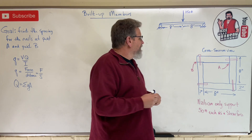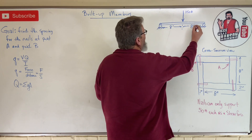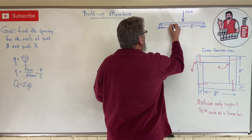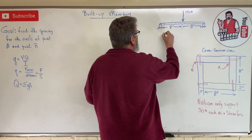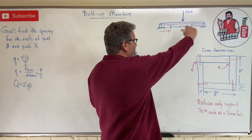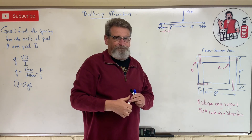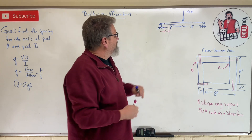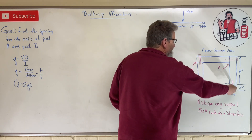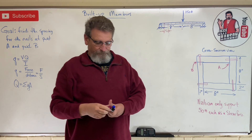The goal here is to find the spacing for the nails at points A and B. The pink things are the nails; they go along the beam as we go across it. What they want to know is the spacing between those nails — some are on the face of the beam, some on the top. This is a cross-section view: four boards nailed together to make a square box with a hollow middle.